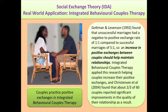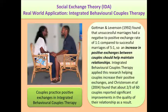Gottman and Levinson (1992) found that unsuccessful marriages had a negative to positive exchange rate of 1 to 1, compared to successful marriages of 5 to 1, so an increase in positive exchanges between couples should help maintain relationships. Integrated Behavioural Couples Therapy applied this research, helping couples increase their positive exchanges, and Christensen et al. found that about two-thirds of 60 couples reported significant improvements in the quality of their relationship as a result.